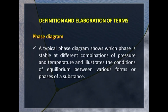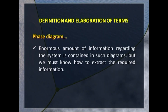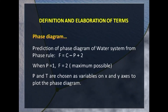A phase diagram shows which phase is stable at different combinations of pressure and temperature and illustrates the conditions of equilibrium between various forms or phases of a substance. Enormous amounts of information regarding the system are contained in such diagrams. For the water system, phase rule tells us that when P equals 1, F equals 2 — the maximum possible degrees of freedom — and we can plot pressure versus temperature to get the phase diagram.